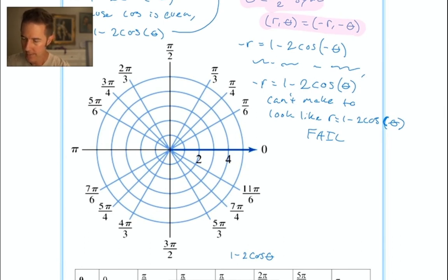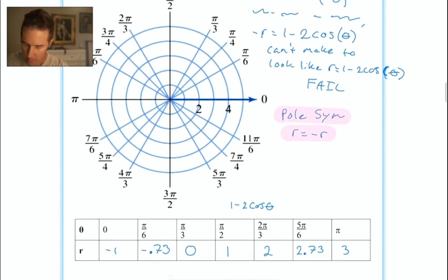The last symmetry test is pole symmetry. We test by letting r = -r: -r = 1 - 2cos(θ). This is exactly the same troublesome situation. There's no way to make it look like the original. Fail again.